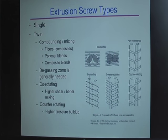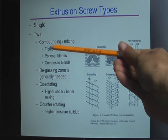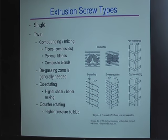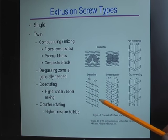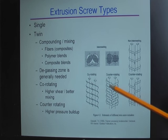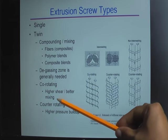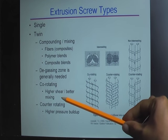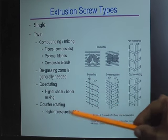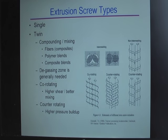Generally we have single screw extruders and twin screw extruders, and we have both types in the plastics lab. Twin screw extruders are good for compounding and mixing — for example, if you need to make a composite or blend. Twin screw extruders generally need a de-gas zone to release the gas between the pellets. Depending on how the two screws rotate relative to each other, you can have co-rotating or counter-rotating twin screw extruders. Co-rotating provides a higher shear rate and better mixing, while counter-rotating can lead to higher pressure build-up. The key takeaway is that twin screw extruders are better for mixing and compounding.